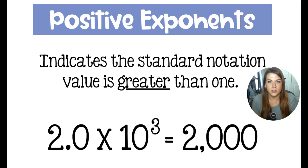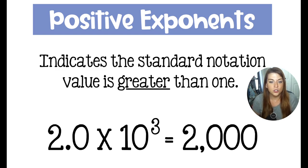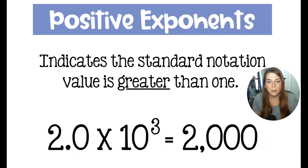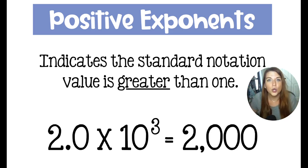Anytime you have a number in scientific notation with a positive exponent, it means that your number is greater than one. So 2.0 times 10 to the third is really 2000. You take this decimal and you move it three places, which would give us three zeros. This is a coincidence that they're the same number — the number of jumps and the number of zeros is the same. Coincidence. Positive exponents indicate that our number is greater than one.